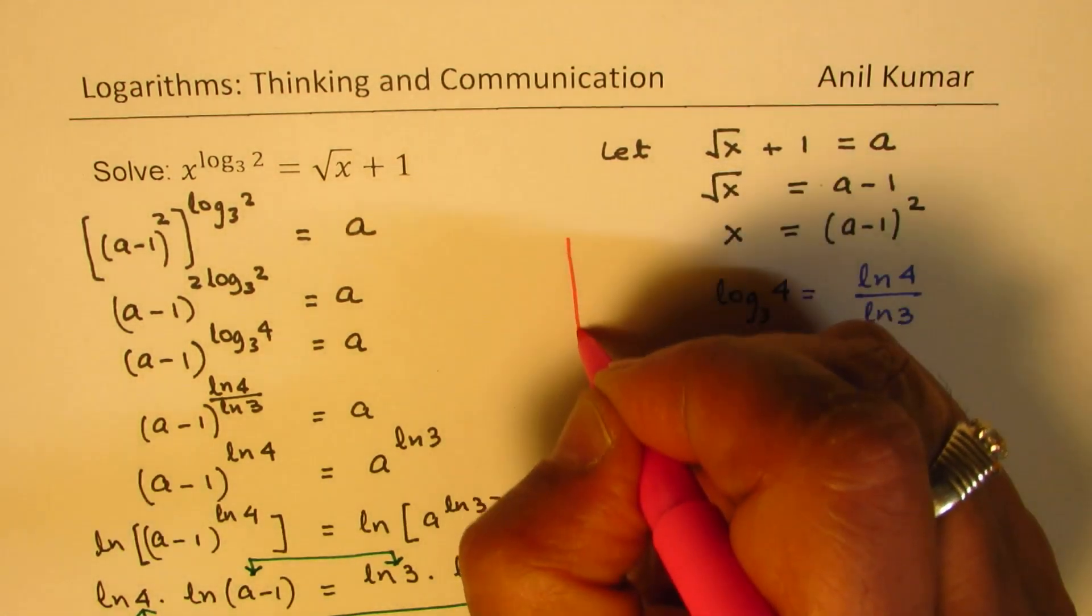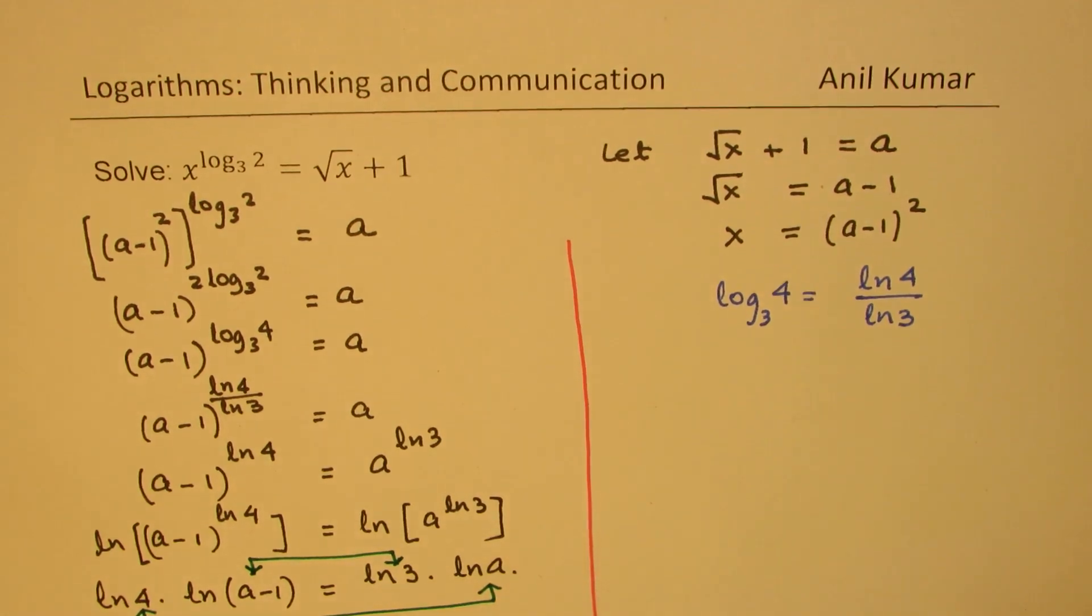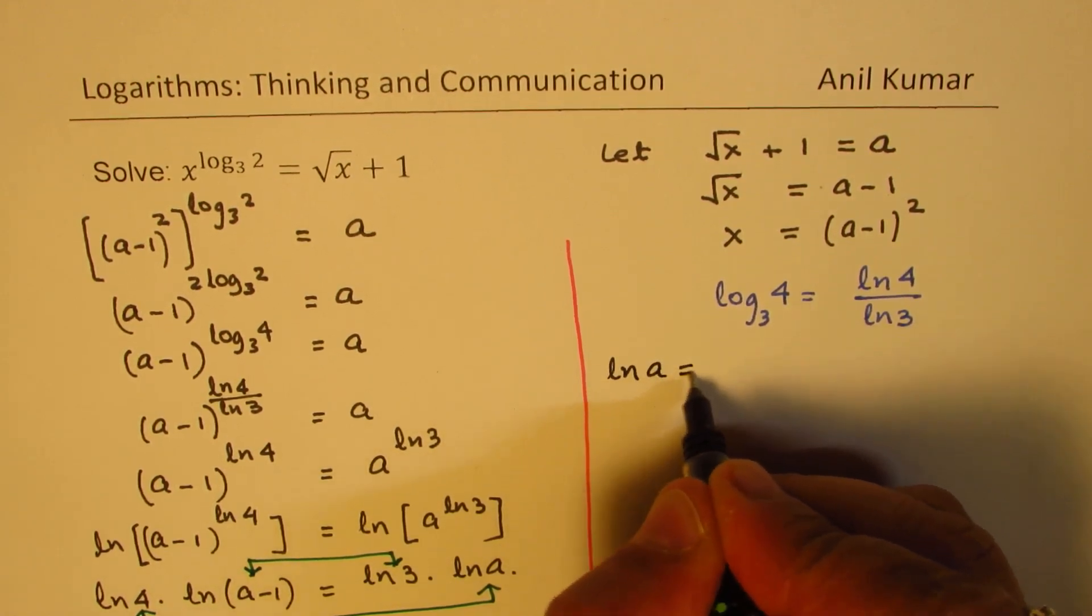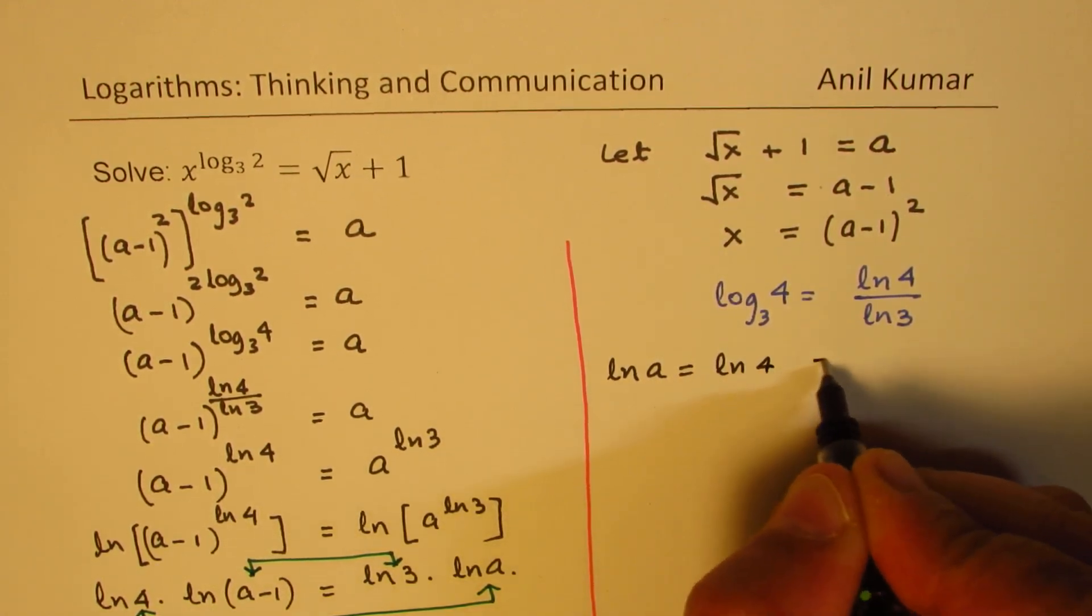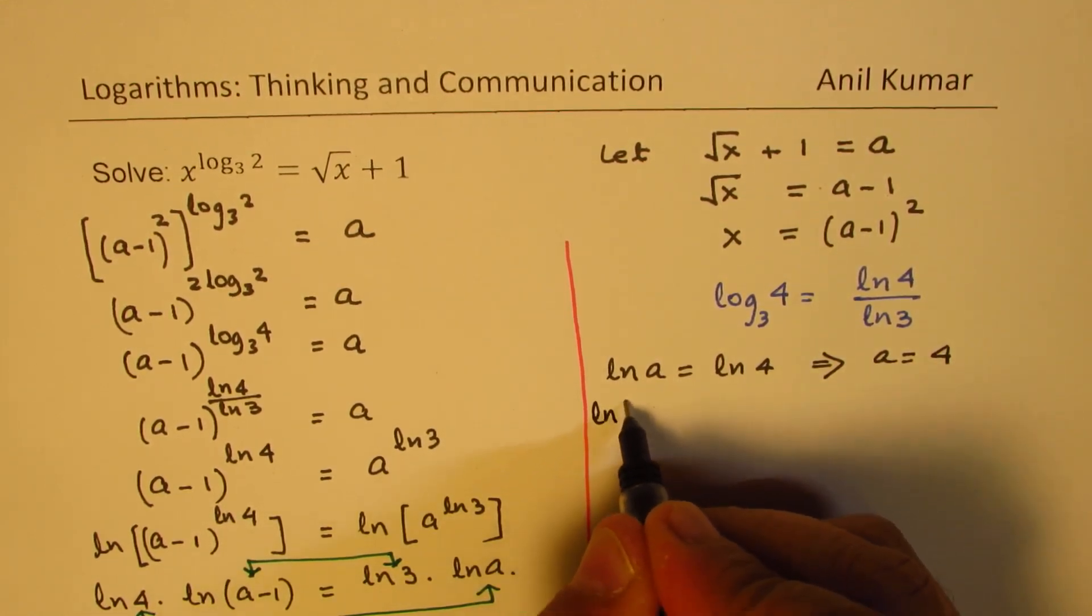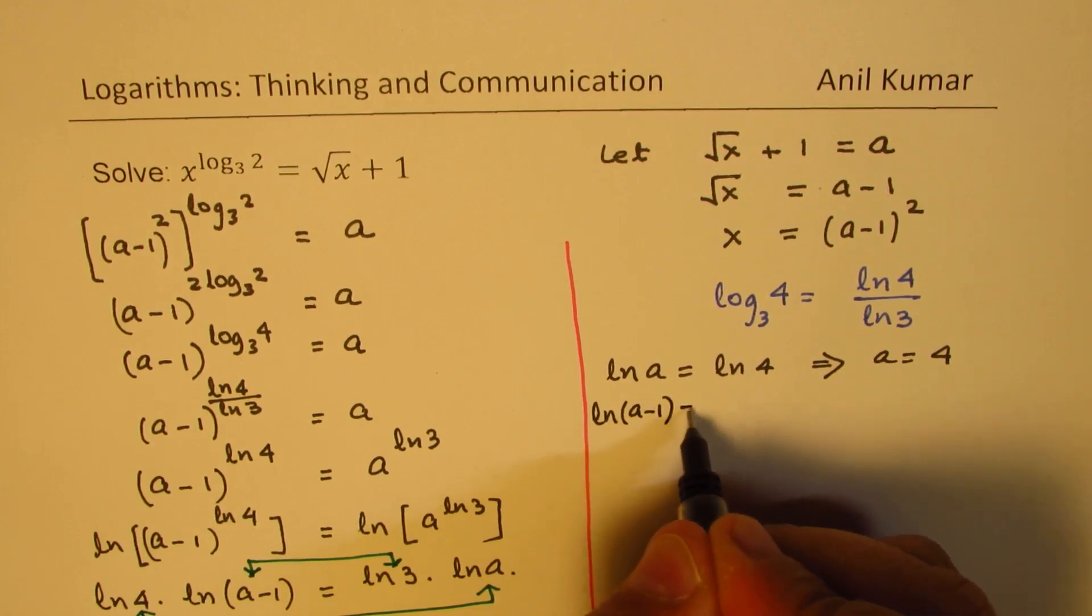Let me write down on the right hand side the equivalent equations from here. So we get ln a equals ln 4 which implies that a equals 4.